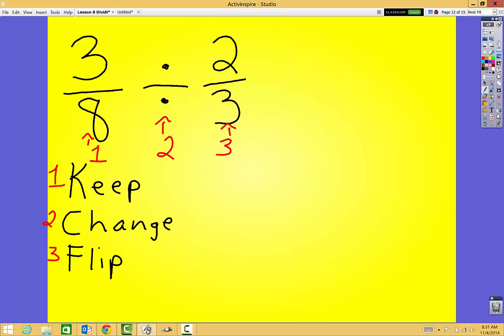So let's walk through an example. My first step is K, that KEEP. So I'm going to keep three-eighths the same. So I copy it down, and it's going to be the exact same.